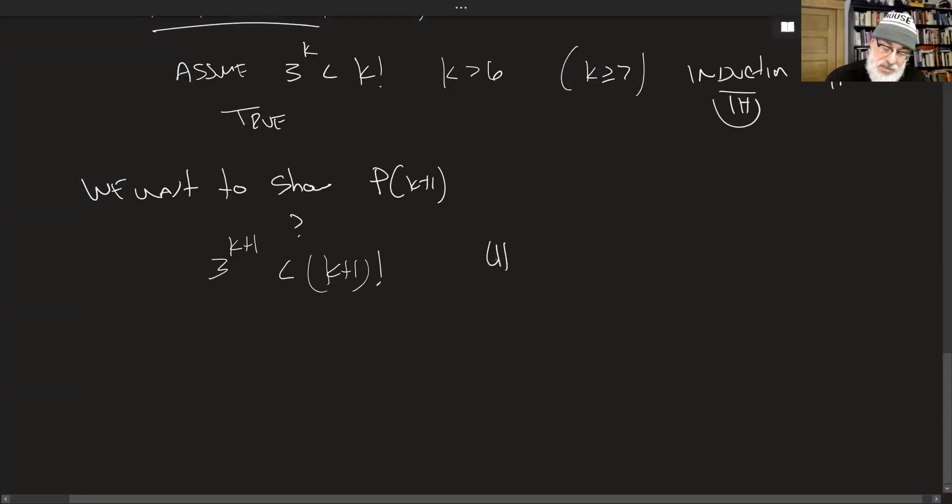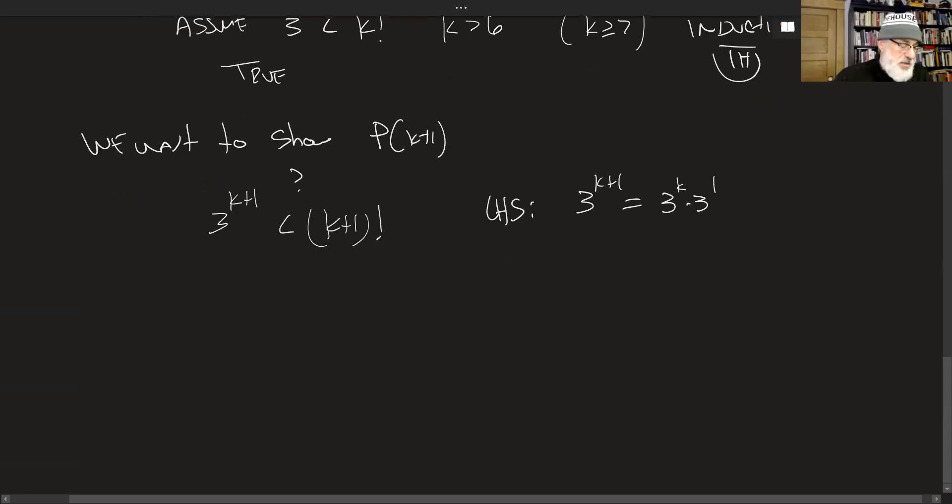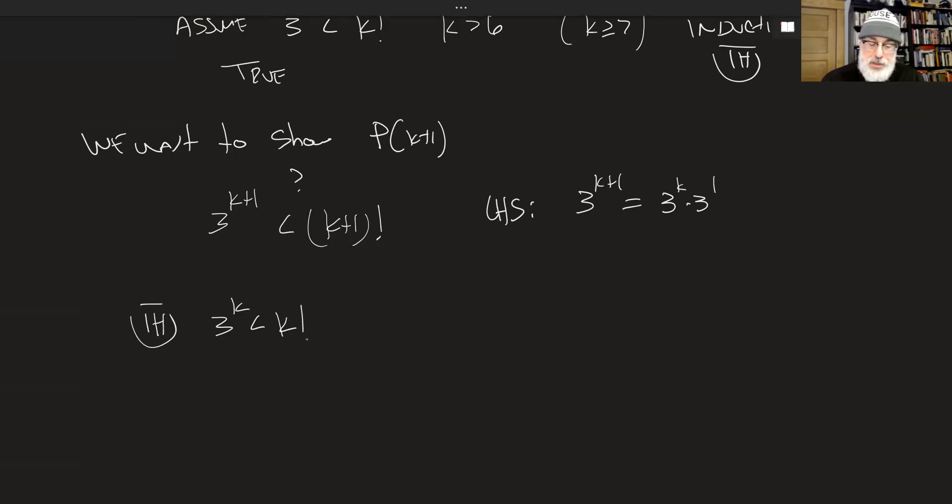So let's start on the left-hand side here. And let's notice that 3^(k+1), by the rules of exponents, can be written as 3^k times 3^1. So a good place to start would be the induction hypothesis. The induction hypothesis says that 3^k is less than k factorial. I use the IH here, and that's awesome. So 3 raised to k is less than k factorial. It's true by the induction hypothesis.